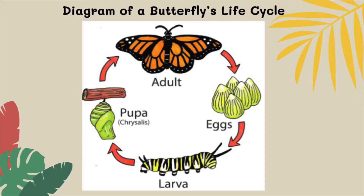Now we're going to look at a diagram of a butterfly's life cycle. The first stage is eggs. The second stage is larva, which is also a caterpillar. The third stage is pupa, which is also called chrysalis. And then the fourth stage is an adult butterfly.